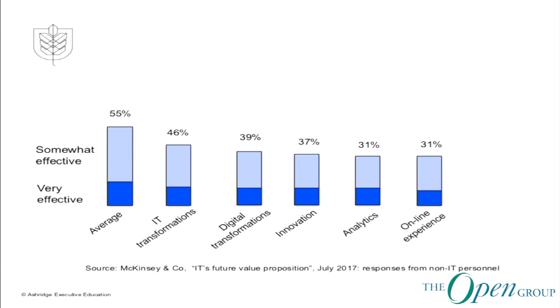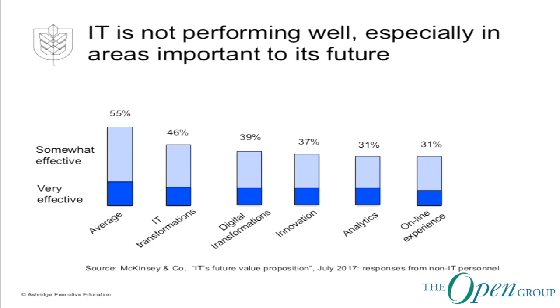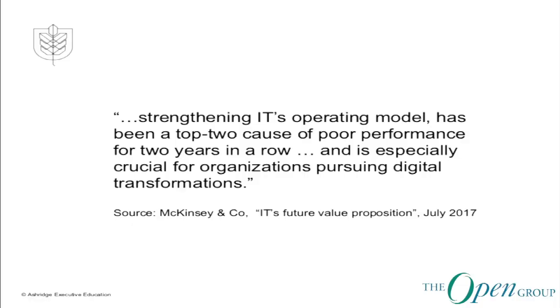Nearly half of the people not involved in IT who use your services are somewhat or very dissatisfied. And it gets worse when you look at the issues that Rob was raising in terms of the challenges coming up around transformation, digitalisation, innovation, analytics, and online digital experience. So from the user's perspective, IT is not perceived to be performing that well at the moment. The report goes on to argue that one of the core reasons for this is poor operating models in IT — and this is the IT people speaking — saying strengthening IT's operating model has been a top two cause of poor performance for two years in a row.